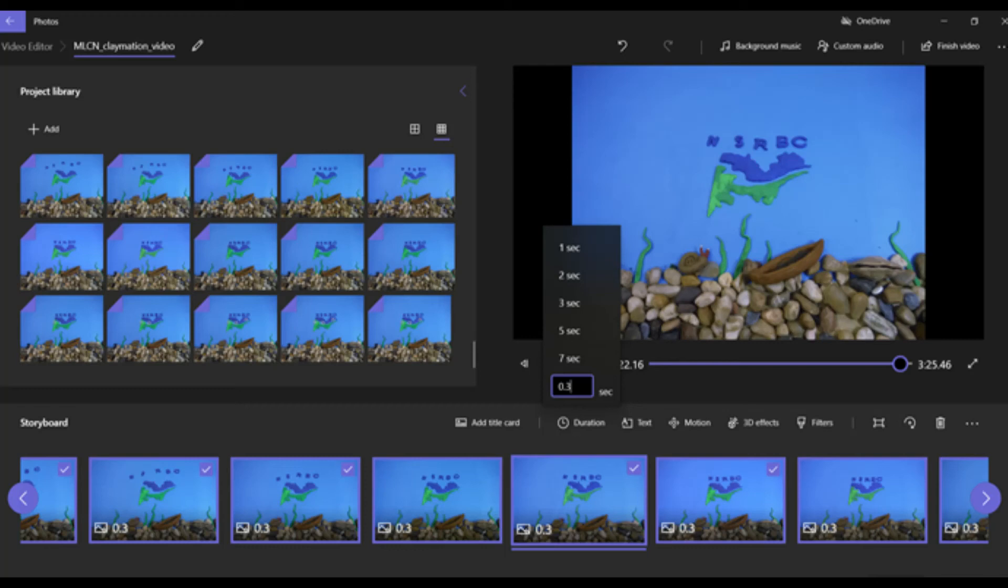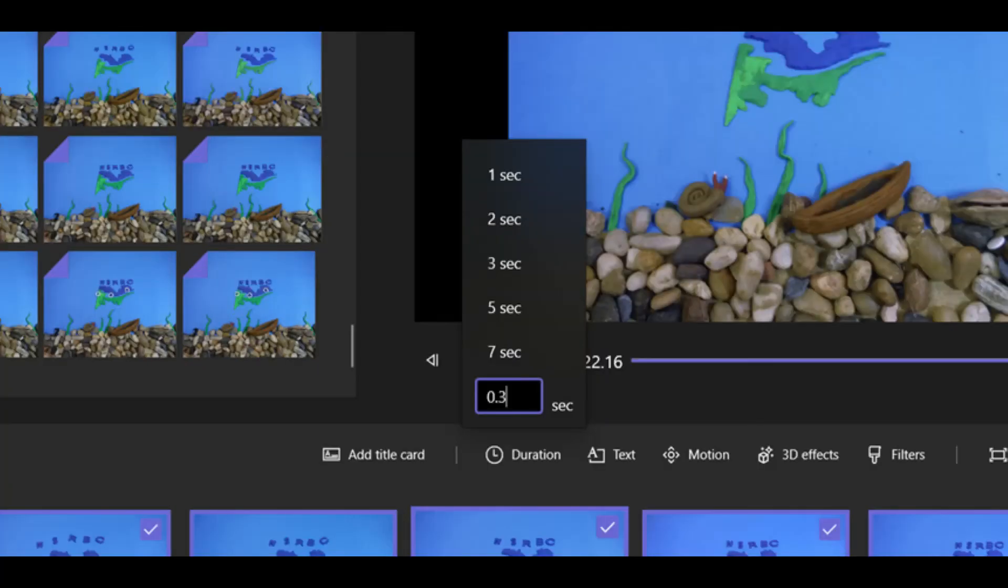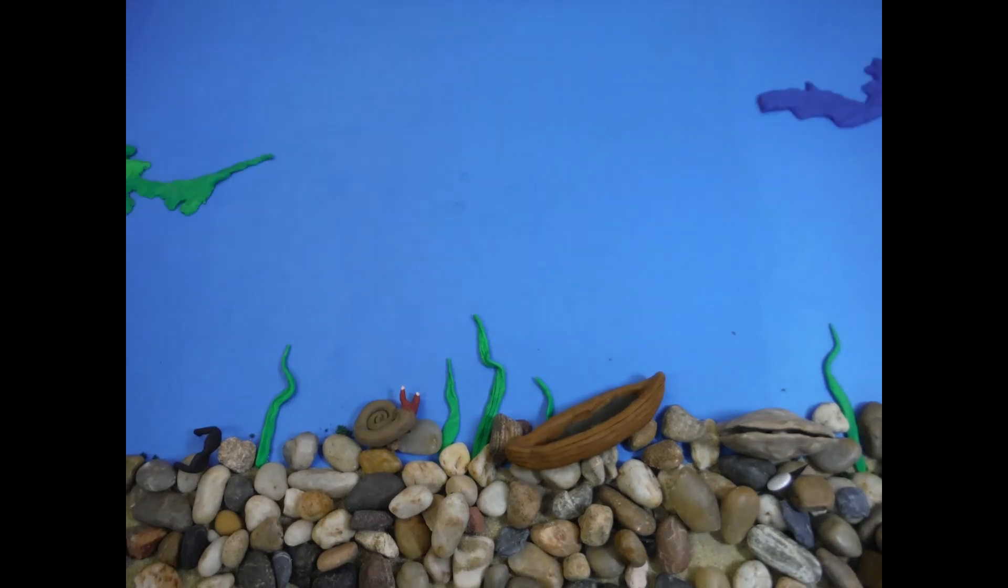Once in the video software, we recommend setting the duration of each picture to 0.3 seconds. That's a good starting point to see how your objects will move in the video once you hit play. Once you've changed the duration of each photo and finished any final edits, you can then hit play in the software and watch your claymation come to life.